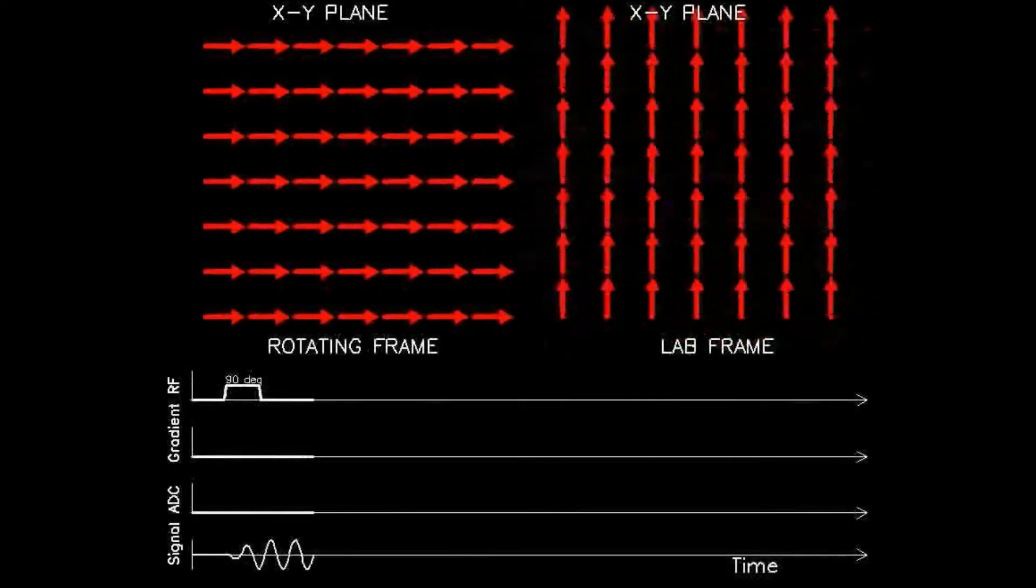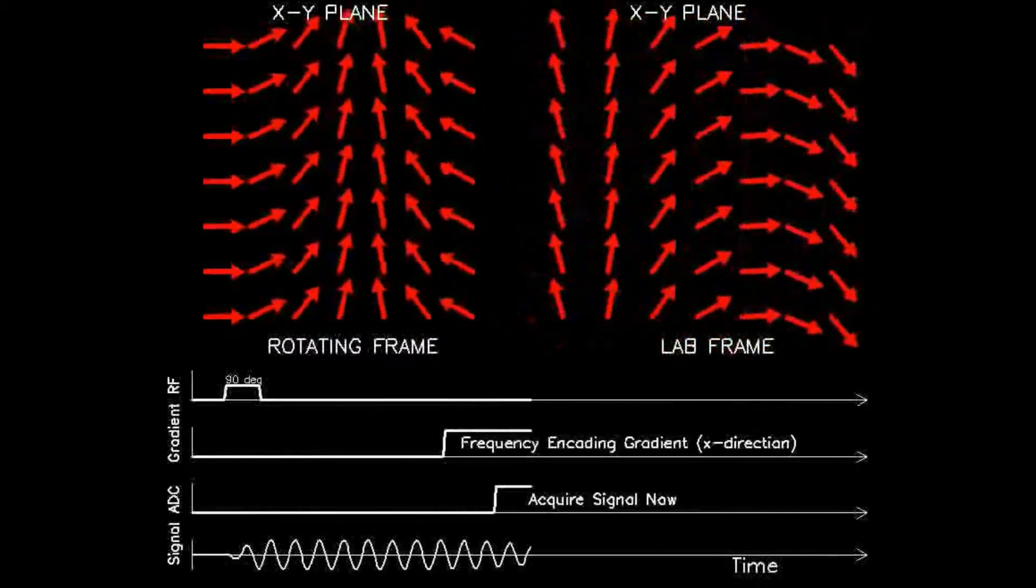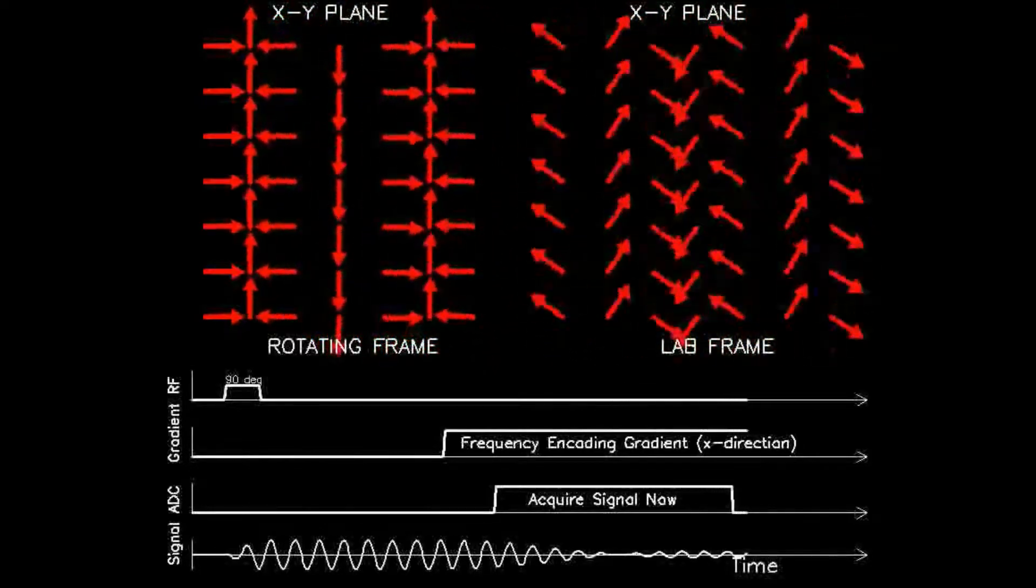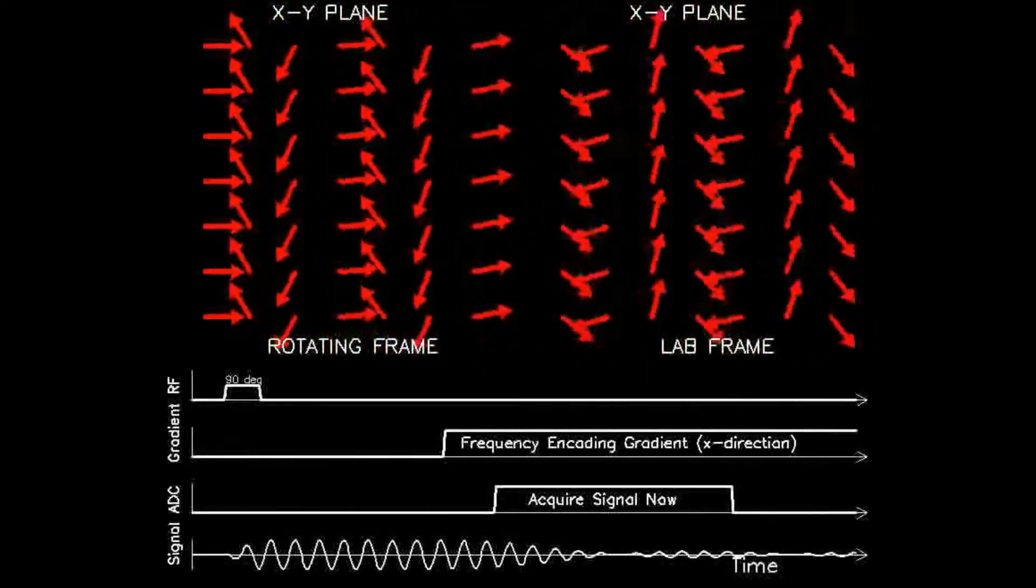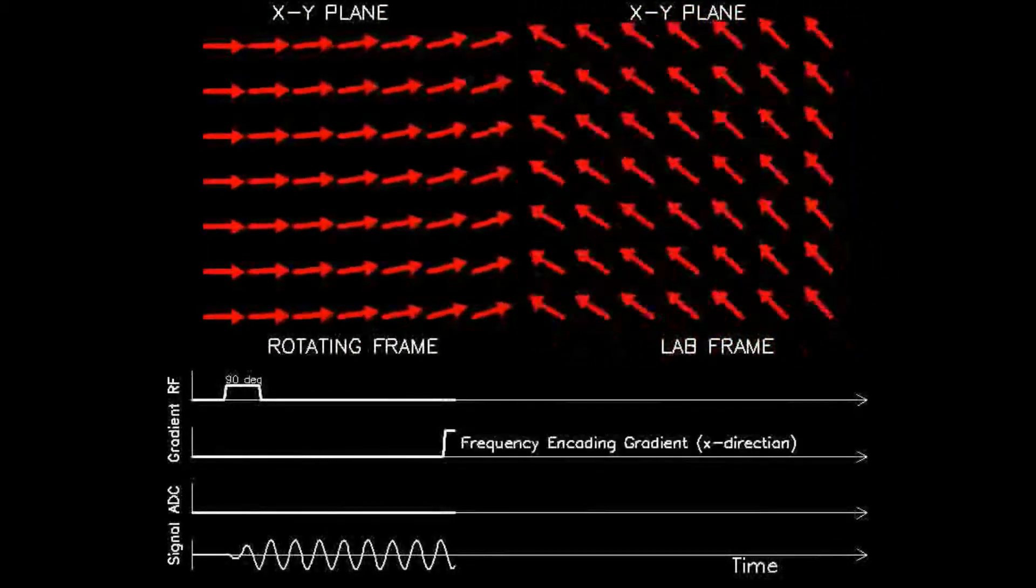This animation illustrates the strategy of frequency encoding. The top left and right panels show an array of 7x7 voxels in the rotating and laboratory frames respectively, with each arrow representing the net transverse magnetization vector of all the dipoles within the voxel.